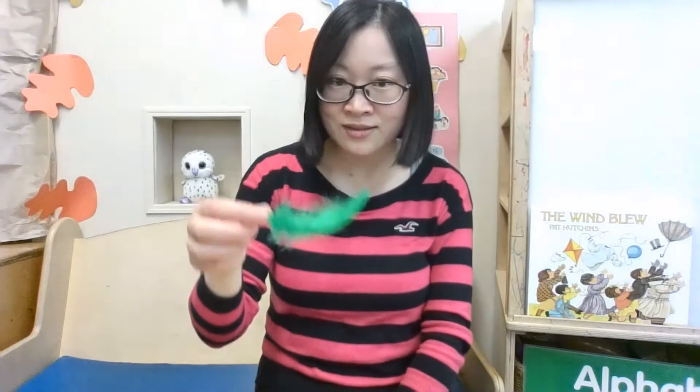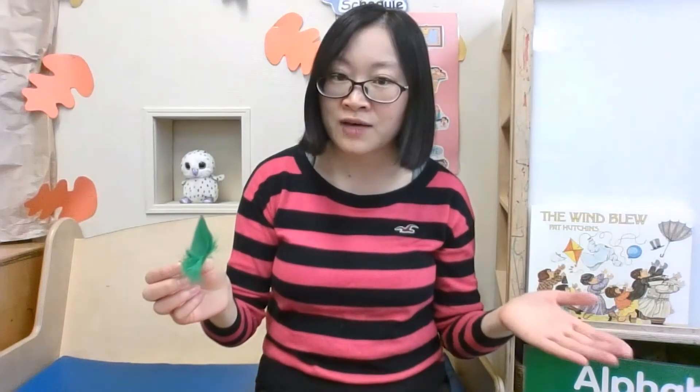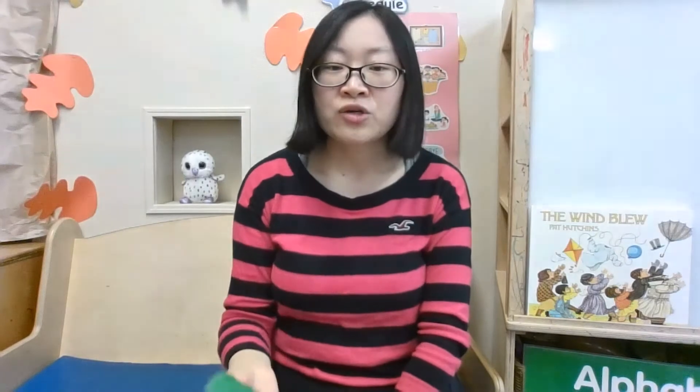You are going to blow the feather to the other side. This activity teaches children the concept of directions. If you want the feather to go forward, you blow forward. If you want the feather to go to the right side, then you have to blow from your left side to the right side.